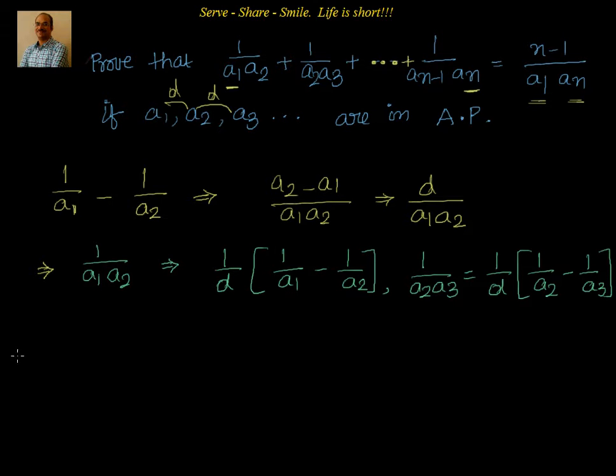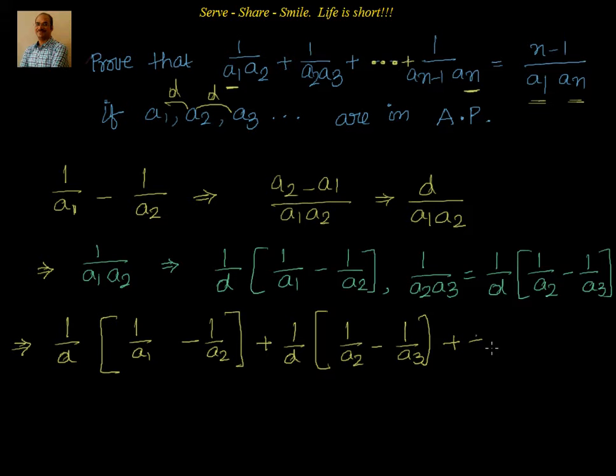So, we will write down the first step. We will say that 1 by a1a2 is equal to 1 by d. I can take common in all of them. Then, I will have 1 by a1 minus 1 by a2. This is what is for the first one. Then, I will have 1 by d into 1 by a2 minus 1 by a3. This goes on till the last term.